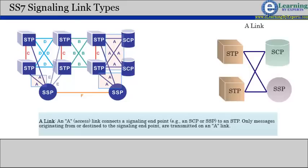A link, an A or access link, connects a signaling endpoint, for example an SCP or SSP, to an STP.